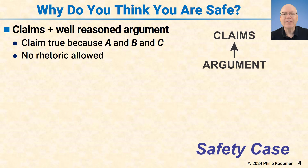We might say that the primary safety claim of acceptably safe is true because different parts of acceptable safety — subclaims A, B, C, and so on — are true through an argument that puts together some pieces to come up with a conclusion that the overall claim of safety is true.